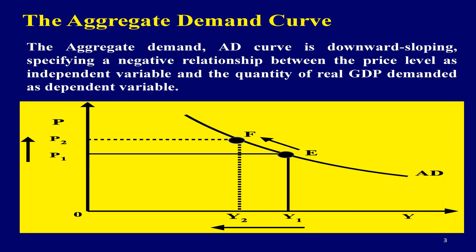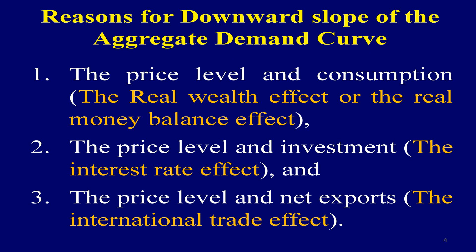The aggregate demand curve, abbreviated as AD, is downward sloping, specifying a negative relationship between the price level as the independent variable and the quantity demanded of real GDP as the dependent variable. As price level increases, the quantity demanded of real GDP will decrease, and vice versa. When price level increases from P1 to P2, the quantity demanded of real GDP will decrease from Y1 to Y2. This is represented by a movement from point E to point F on the same AD curve.